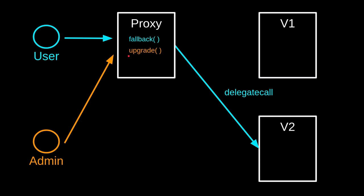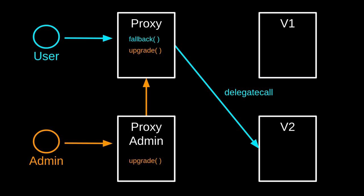The proxy contract will have a function to upgrade the implementation from V1 to V2. And we probably should restrict access to this function — only the admin should be able to call upgrade. For our example, we'll be using OpenZeppelin. When we use OpenZeppelin for our upgradable contract, it deploys three contracts: a proxy, an implementation (this will be our custom logic code), and a contract called proxy admin.